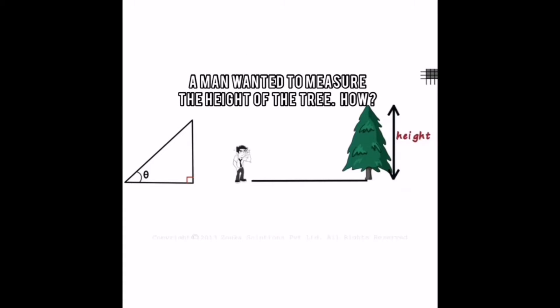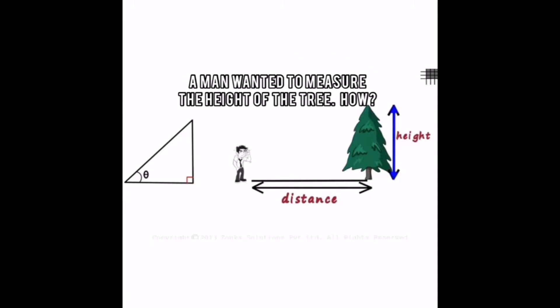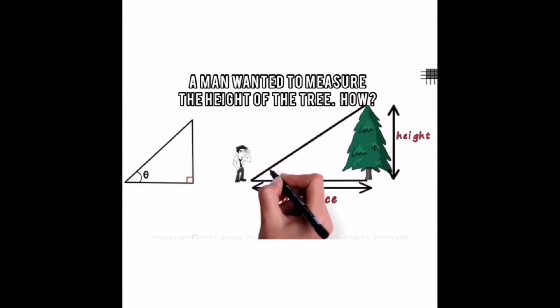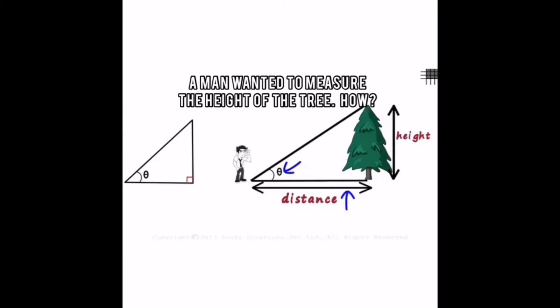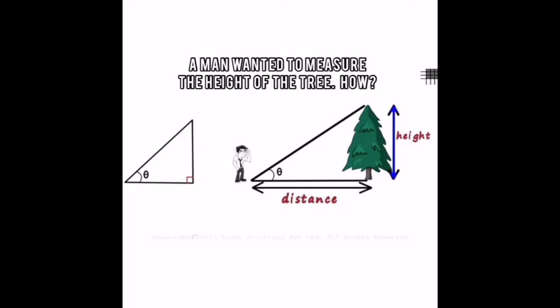Remember, it's always easier to find the distance or the length on the ground than finding the distance vertically. And we can find the approximate measure of this angle which is theta. With just these two pieces of information, Zen can find the height of this tree.